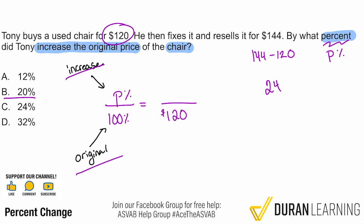If mental math is tricky for you, make sure you practice it, because on the ASVAB we don't get calculators. You've got to put yourself in the best position to succeed by knowing your mental math. So $24 is the increase, and $120 is the original he paid — it matches up. The 24 represents the increase.